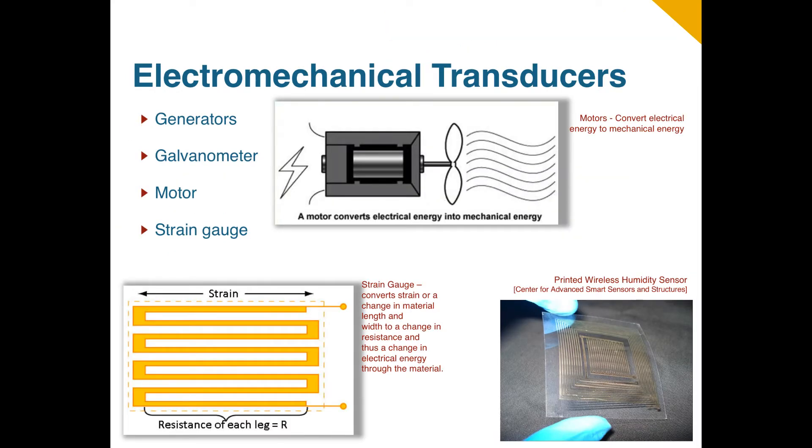Electromechanical transducers are transducers that either convert electrical energy to mechanical energy, or motion, or convert mechanical movement, such as deformation or stress, into electrical energy. Electromechanical transducers, some of which are also called actuators, include generators, which convert mechanical energy, or motion, into electrical energy. Galvanometers, which convert the electric current of a coil in a magnetic field into movement, and motors, which convert electrical energy into mechanical energy.